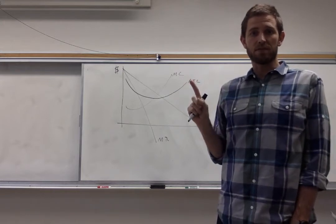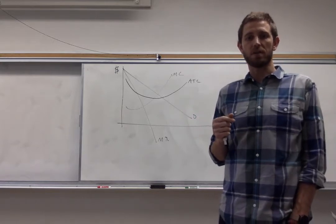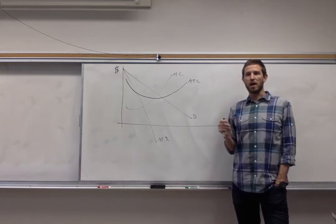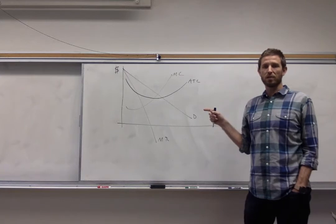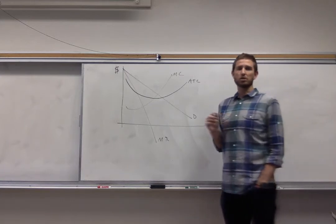The first step is to figure out what quantity is best for them. What's the profit maximizing quantity for this firm? Here you're going to use the same rule of thumb that you apply for perfect competition and monopolistic competition. Anywhere you can you want to use this rule. It's that you want to produce where marginal revenue equals marginal cost.